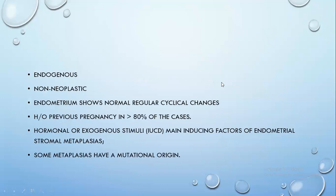The process is endogenous most of the time, meaning it has an insidious onset. It is non-neoplastic — so it is not any form of malignancy. Importantly, when you have this kind of pathology, the endometrium can show no more regular cyclical changes, and in more than 80% of cases of osseous endometrial metaplasia there is always a history of a previous pregnancy or even pregnancy loss.